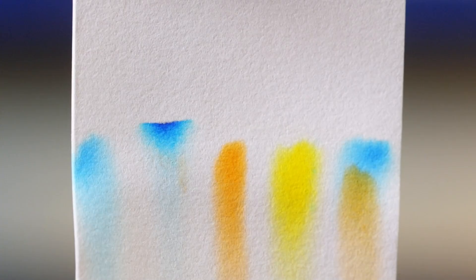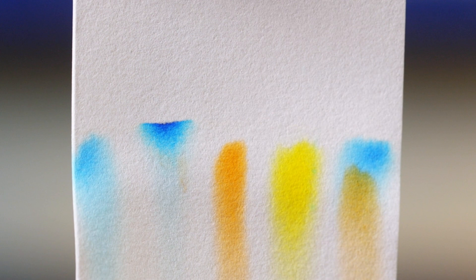However, we can see that the green food coloring is a mixture of a blue and yellow pigment. We can tell this because it contains two spots.